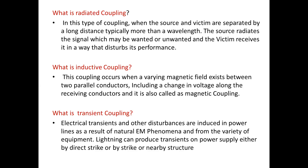What is transient coupling? Electrical transients and other disturbances are induced in power lines as a result of natural electromagnetic phenomena and from a variety of equipment. Lightning can produce transients on a power supply either by a direct strike or by a strike on a nearby structure.